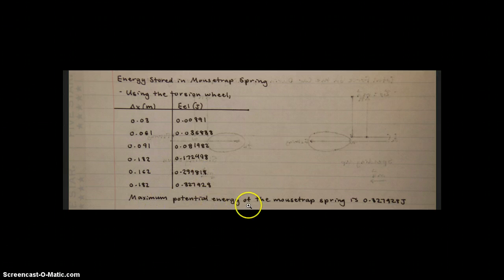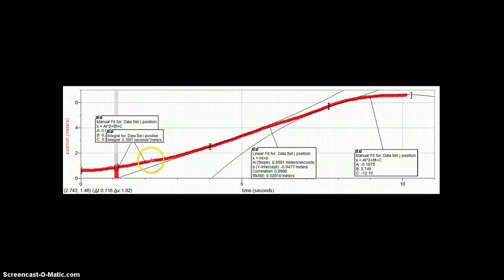We found that the maximum potential energy of the mousetrap spring is about 0.328 joules.